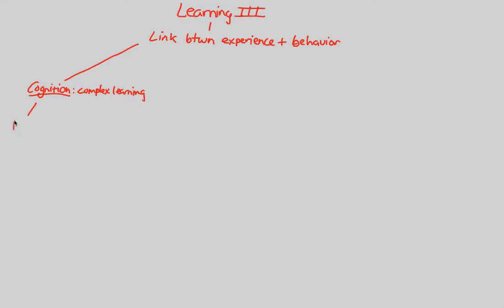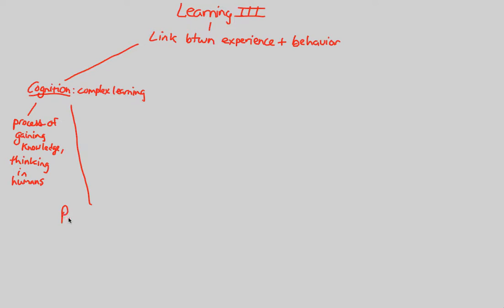We can broadly consider cognition the process of gaining knowledge — a broad understanding of complex things — and it is specifically referred to as thinking. When humans think, they are undergoing cognitive processes that are very high-order and complex in brain orientation. A good way to understand cognition is to look at problem-solving, which is a cognitive pattern of learning and thus a cognitive behavior as well.